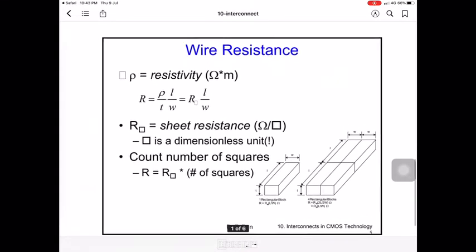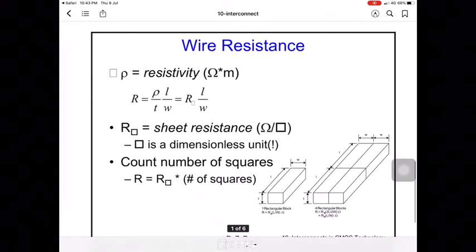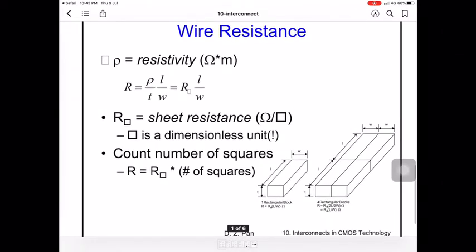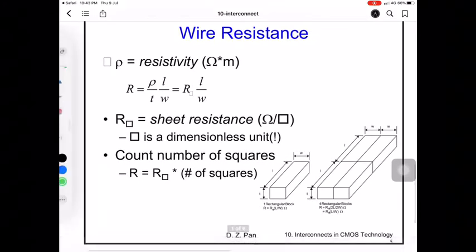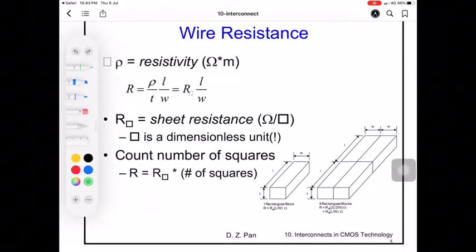Wire resistance can be defined by the formula: resistance equals resistivity times the length divided by the thickness and width of the wire. So R is proportional to L - the longer the wire, the higher the resistance. And the thinner the wire, the fewer electrons traveling, so resistance becomes higher. This is inversely proportional.